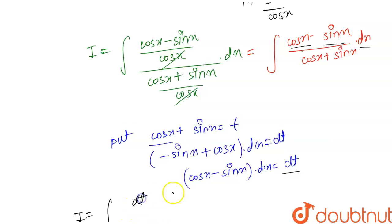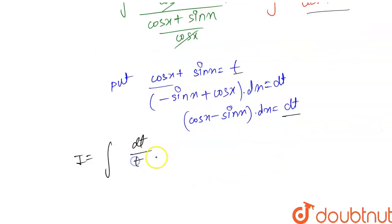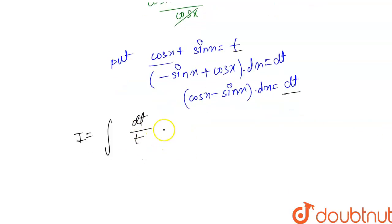So write dt divided by, here cos x plus sin x we take as t, so in the denominator we have t. So integration of 1 by t dot dt is, we know that it is log t plus c where c is an integrating constant.